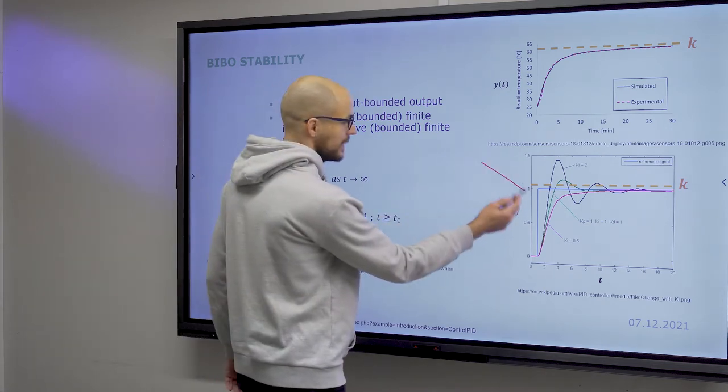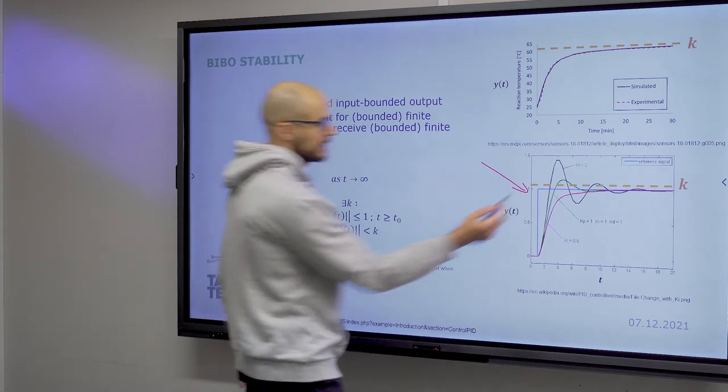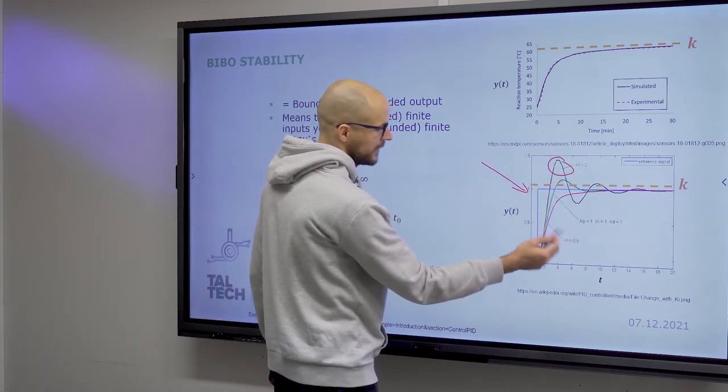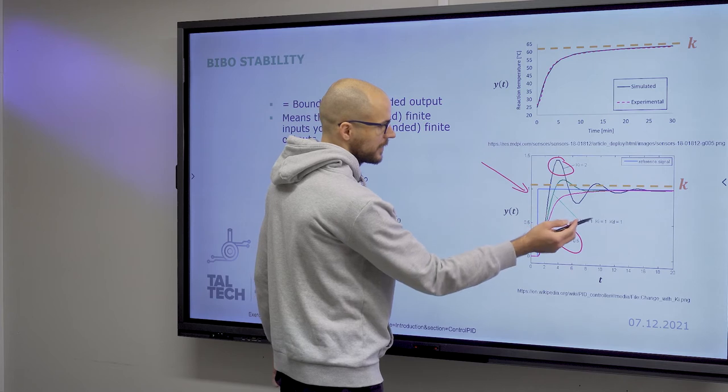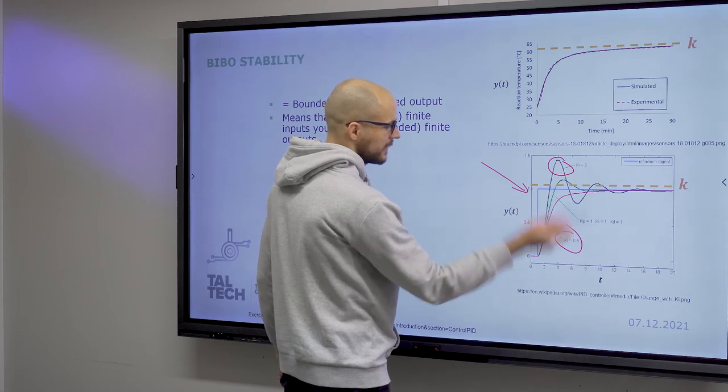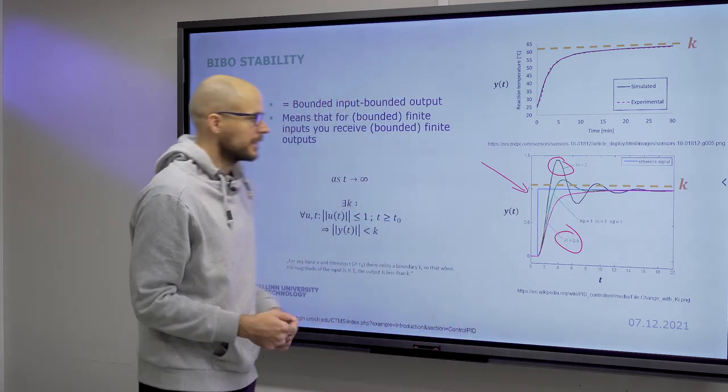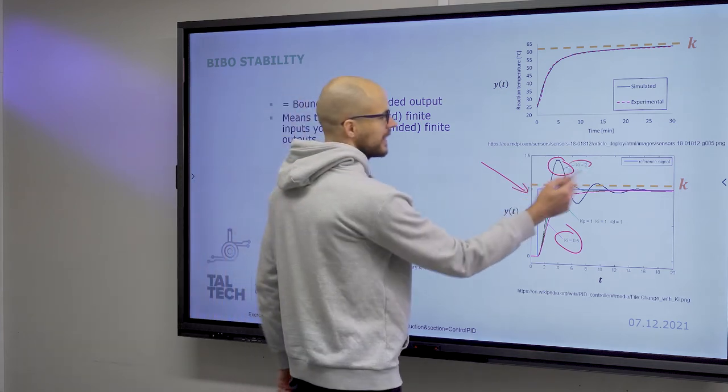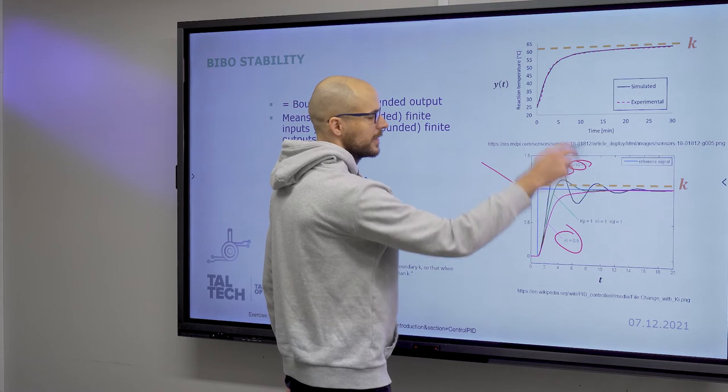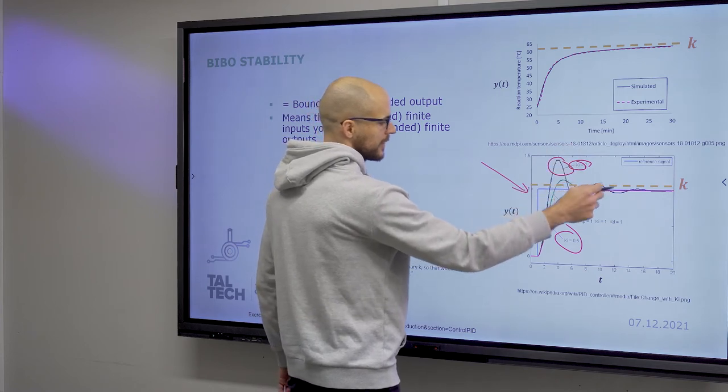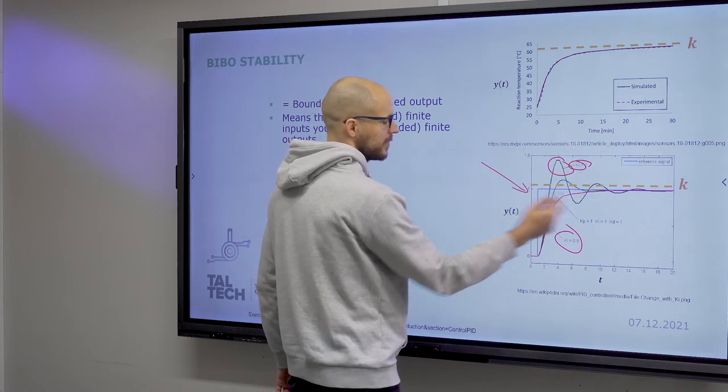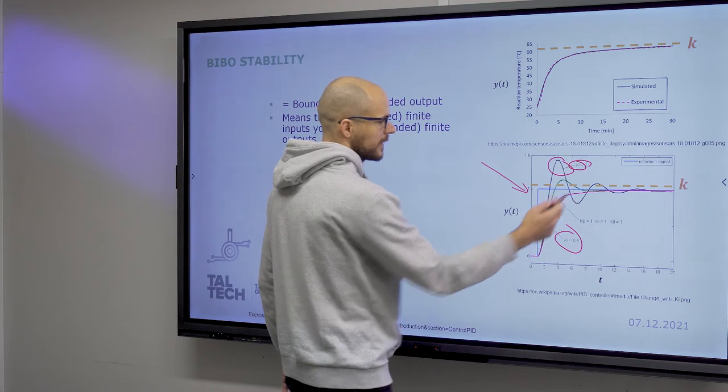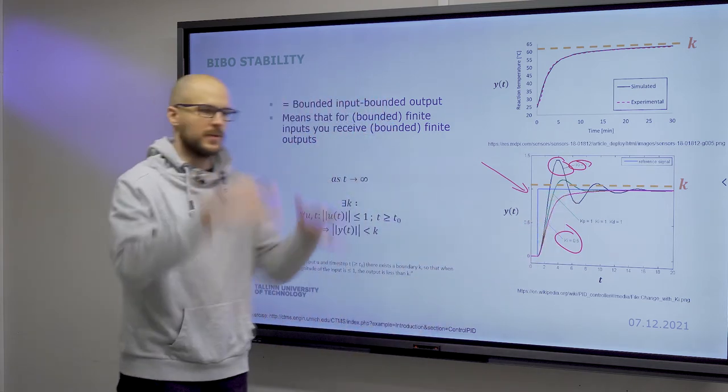So if you look here, if you set the gain too high, then you get an overshoot. If you set the gain too low, then you will have a very slow convergence. And both of them are suboptimal. Also, if you have a very high gain, you will get a really big oscillation around your target, target being here the blue reference signal.